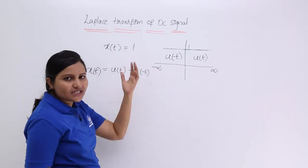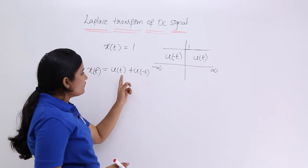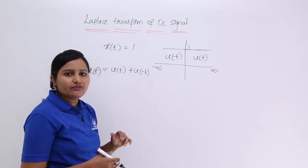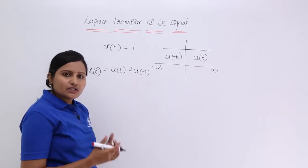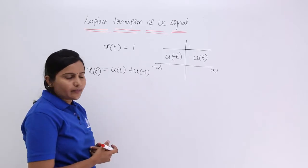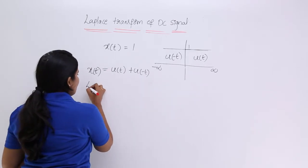If your X of T is equivalent to A, A u of T plus A into u of minus T will be equivalent DC in terms of unit step. So now you know that Laplace transform.